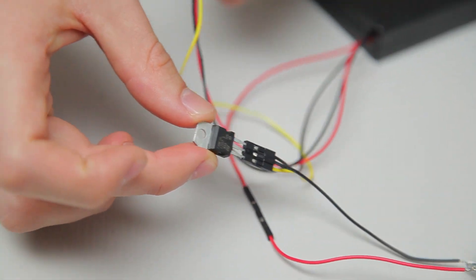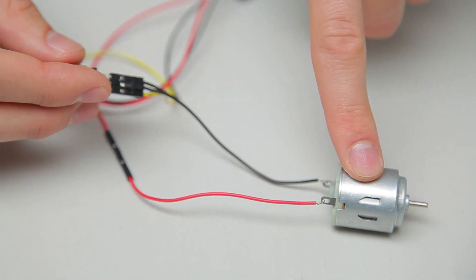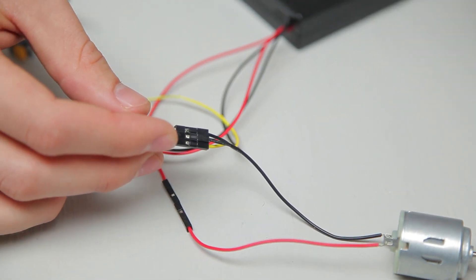When your transistor gets a signal from your motion sensor, it connects the battery pack to your motor, turning it on. And that's basically how your motion sensing spider drops when it does.